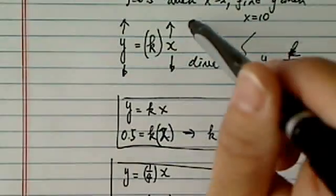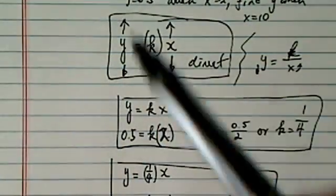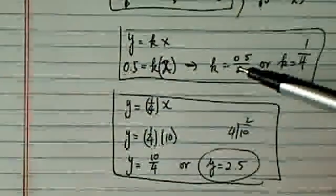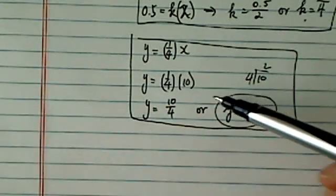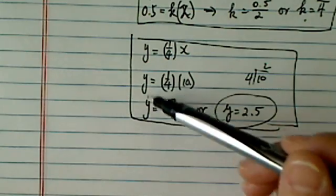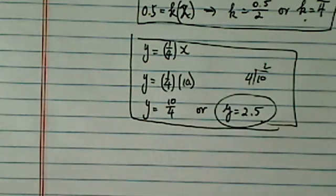The very first block is you have to set it up first. This is for direct variation. So set it up, plug it in, find out what constant k is. And then once you find constant k, plug in the x they're looking for and find the corresponding value for y.